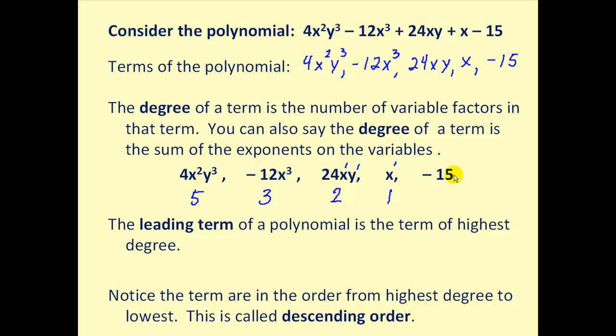This does not have any factors of a variable. Therefore, the degree is zero. Or you could also think of if you had to include a variable, it would have to be something like x to the zero power, because that would be equal to one, which would not change the term.